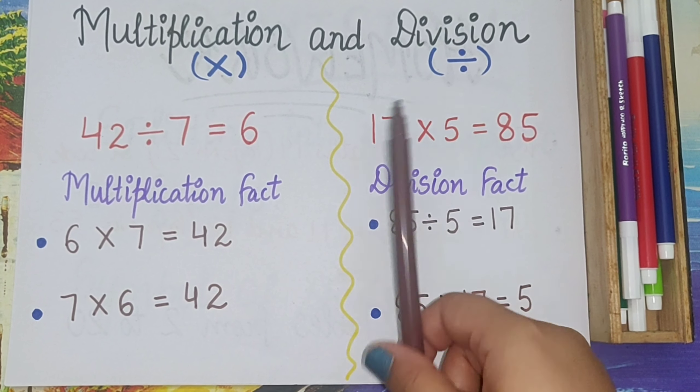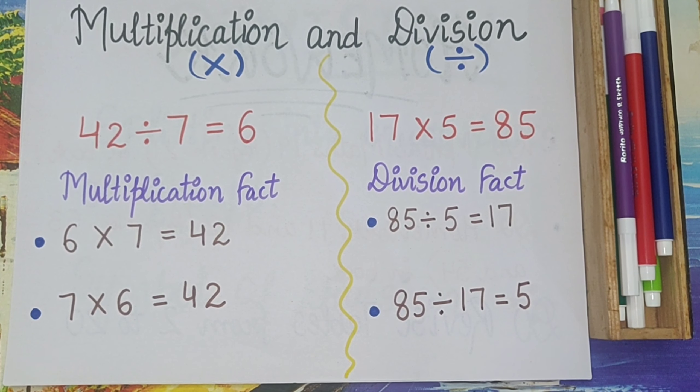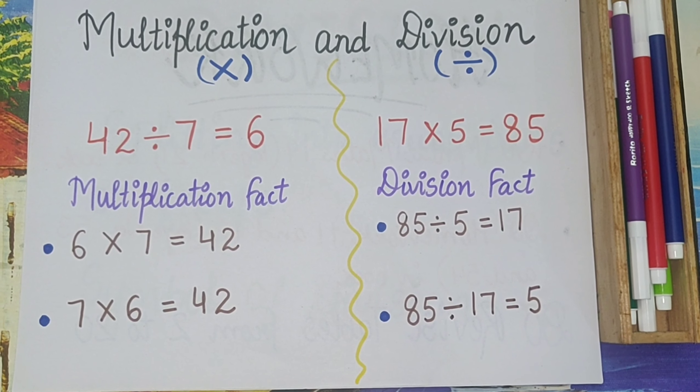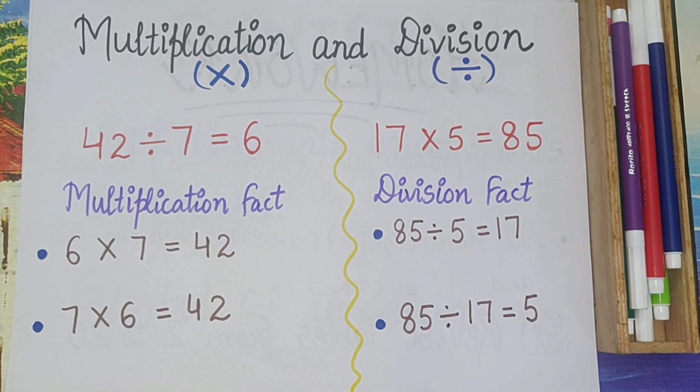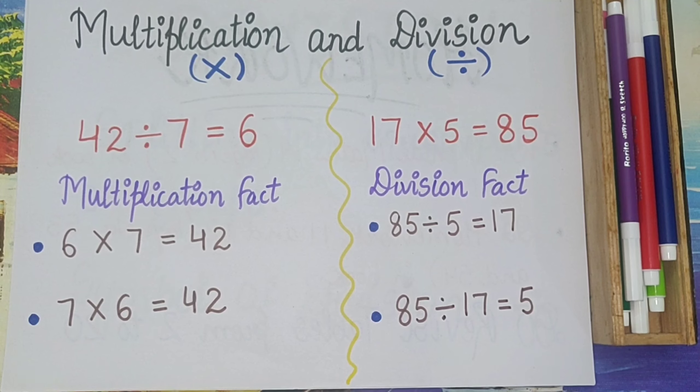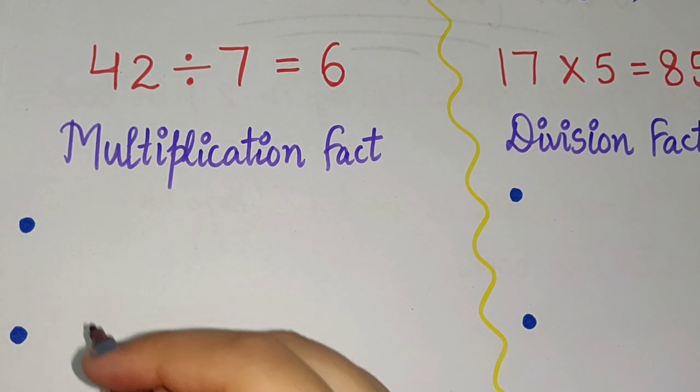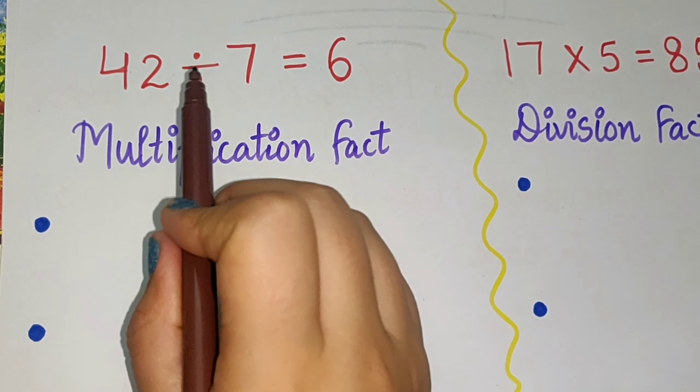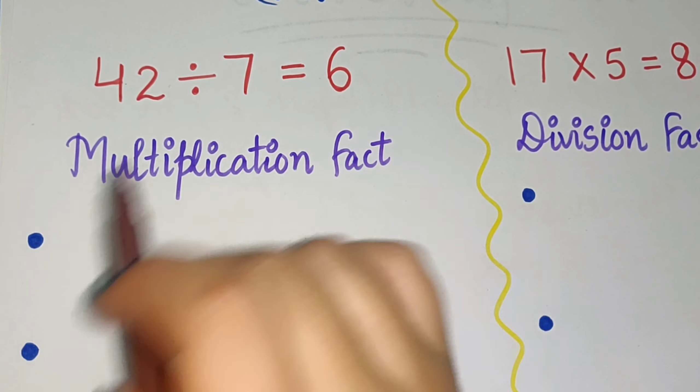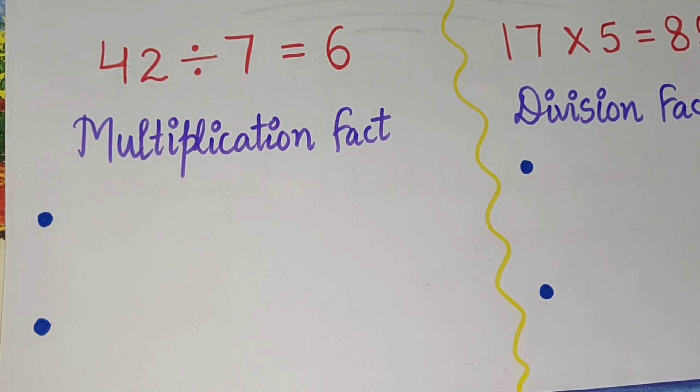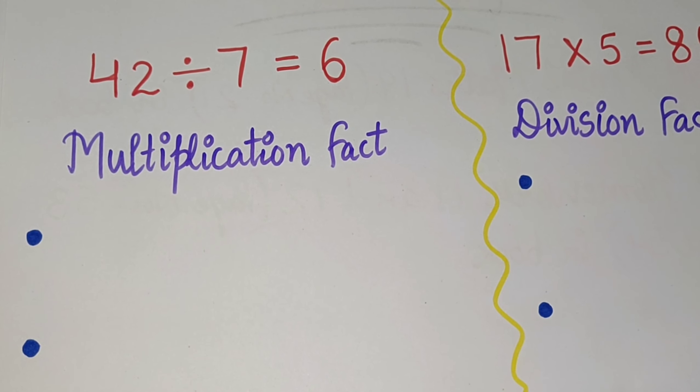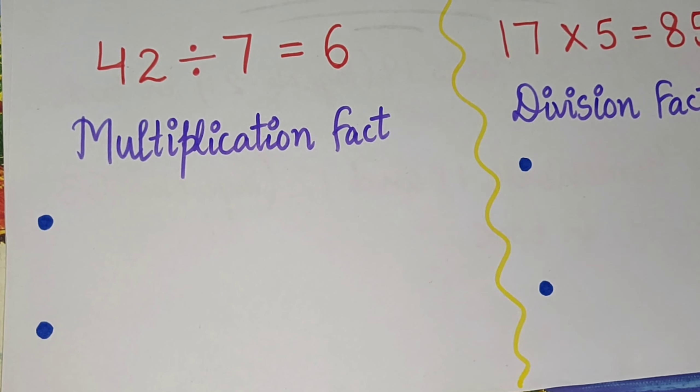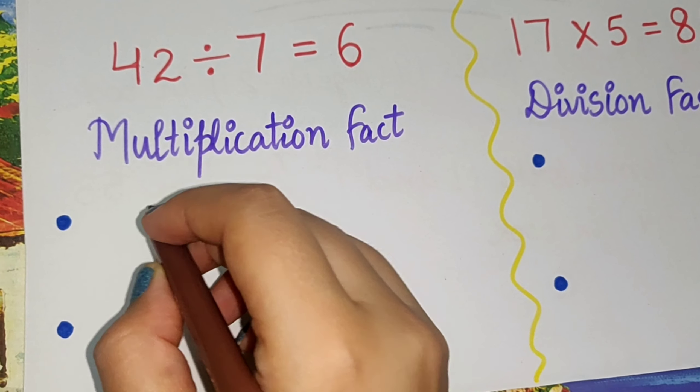Now here we are going to learn how to write multiplication fact and division fact. See, it's so easy. 42 divided by 7 equals 6. Multiplication fact: the first way to write the multiplication fact is we will write 6 multiplied by 7 equals 42.